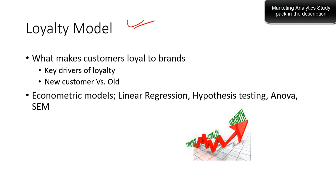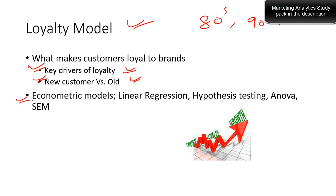Loyalty models in marketing are about finding customers who have been with the brand for a long time, and understanding the reasons why people stay with the same brand. It's important to know the key drivers of loyalty from a company strategy point of view. Loyalty can differ for new versus old customers, and it can change over time — loyalty in the 80s could be different from the 90s and different from today. Techniques used in loyalty modeling include econometric models such as linear regression, hypothesis testing, ANOVA, and structural equation modeling.